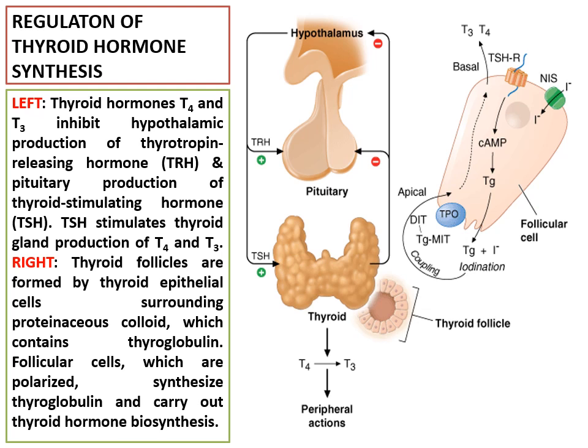Anterior pituitary secretion of TSH is controlled by a hypothalamic hormone, TRH or thyrotropin-releasing hormone, which is secreted by nerve endings in the median eminence of the hypothalamus. From the median eminence, TRH is transported to the anterior pituitary by way of the hypothalamic-hypophysial portal blood.